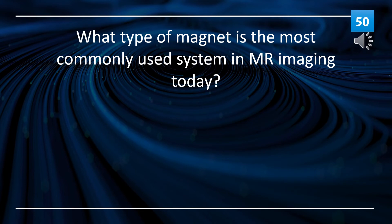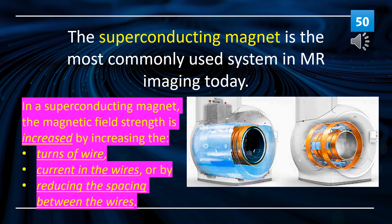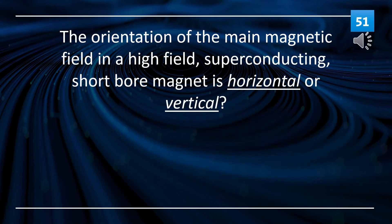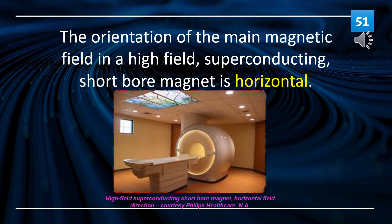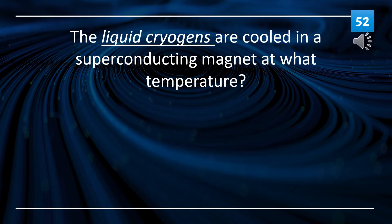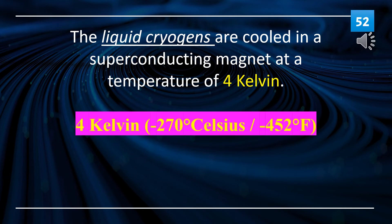The superconducting magnet is the most commonly used system in MR imaging today. The orientation of the main magnetic field in a high field, superconducting, short-bore magnet is horizontal. The liquid cryogens are cooled in a superconducting magnet at 4 Kelvin, which is negative 270 degrees Celsius, or negative 452 degrees Fahrenheit.